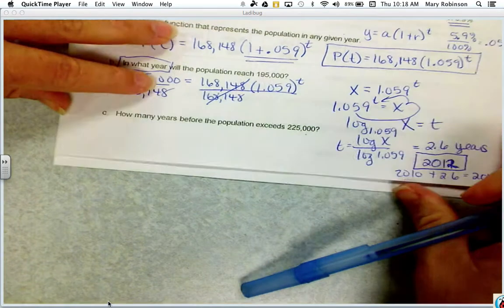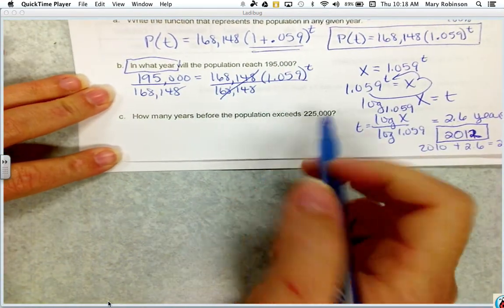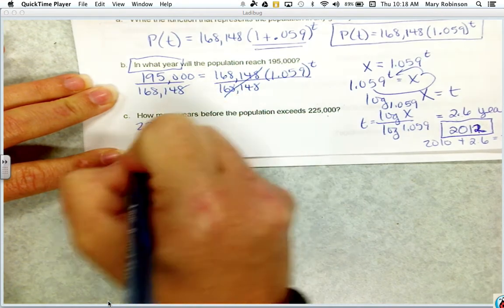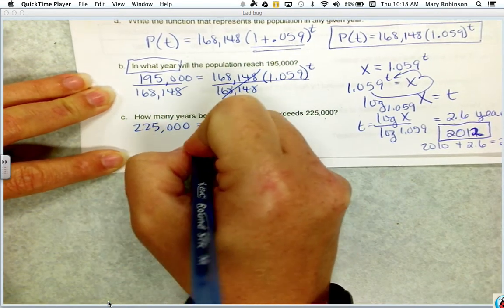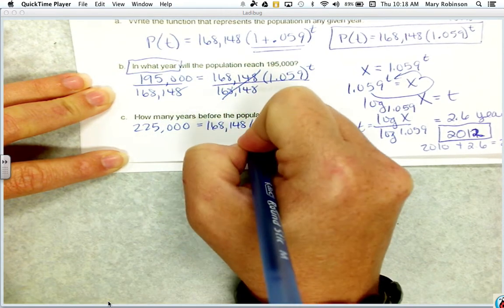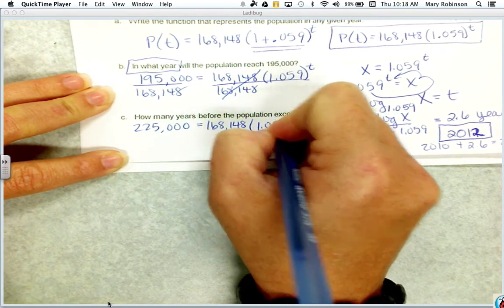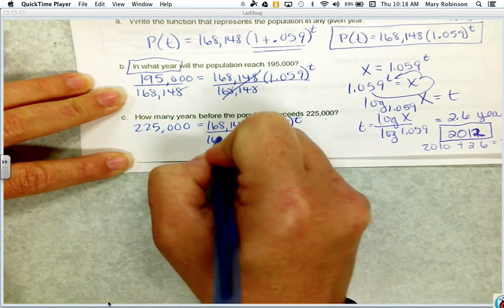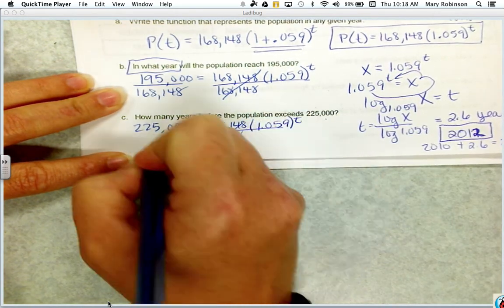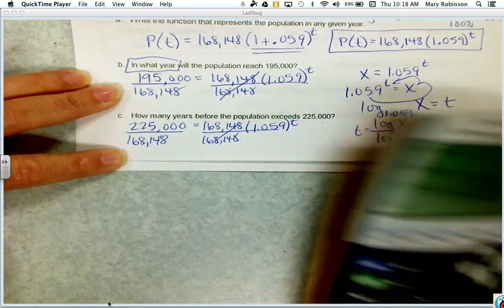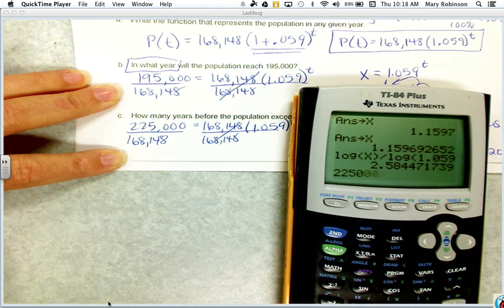Next, it says how long before the population exceeds 225,000? So 225,000 as our final amount, our initial amount, same rate of growth.